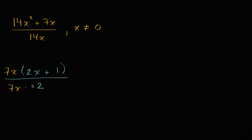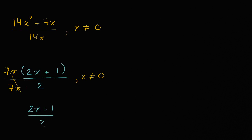Remember, I want to keep this algebraically equivalent, so I want to keep the constraint that x cannot be equal to zero. So we divide the numerator and the denominator by 7x — we divide 7x by 7x. Now if this were the original expression, x could take on any value. But if we want it to be algebraically equivalent to our original expression, it has to have the same constraints on it. So we're going to say x does not equal zero. This is a very subtle but really important thing.